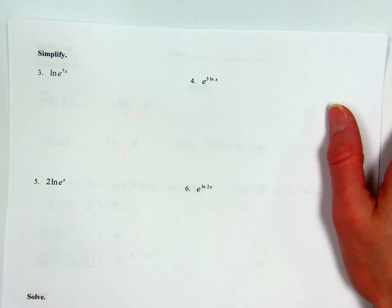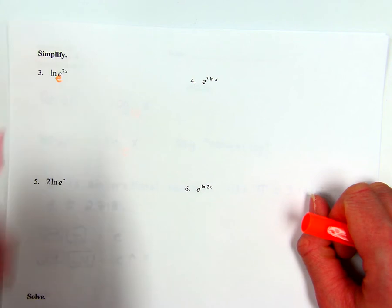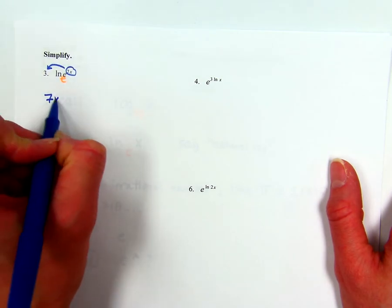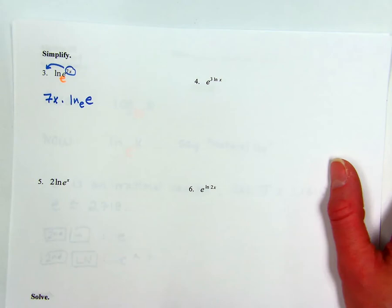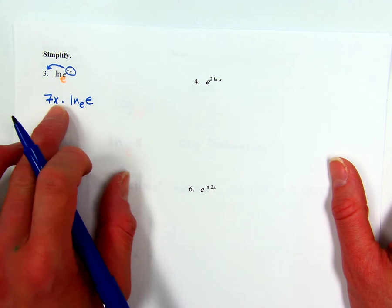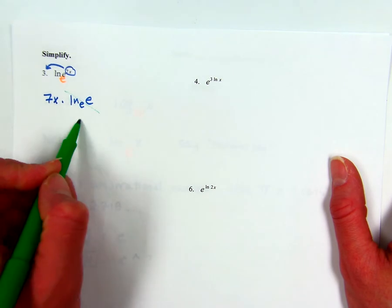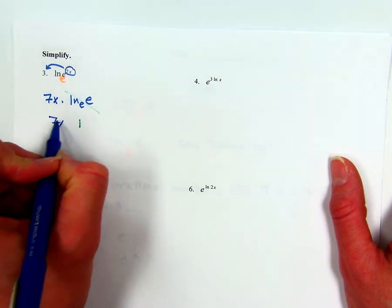Now these problems ask you to simplify. A lot of these involve rules we used earlier in the chapter with basic logarithms. A log and a natural log are the same thing — you just have to know what your base is. When you see natural log, the base is E. So natural log of E to the 7X is really log base E of E to the 7X. You can move the exponent out in front: 7X times log base E of E. Since the log has the same base as the number, they cancel to 1, leaving just 7X.